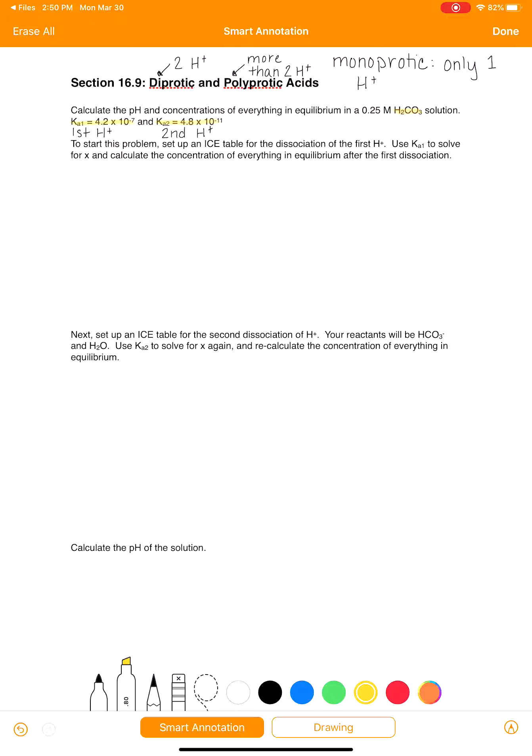So the first thing that we're going to do is set up an ICE table for the dissociation of the first H-plus ion using Ka1 because that's the one that corresponds to the first H-plus. So to set up an ICE table, we start by writing our acid, H2CO3. And remember, it's always plus H2O every time and in equilibrium. And because this is an acid, one of our products is going to be H3O plus. Our other product comes from the hydrogen ion being taken off of the acid and transferred over to the water molecule. So what we have left after that transfer is HCO3 minus.